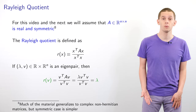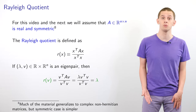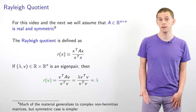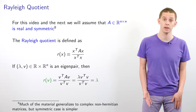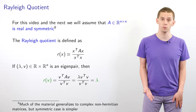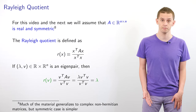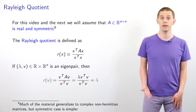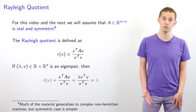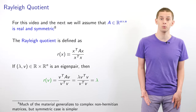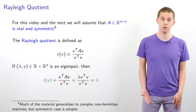For this video and the next we're going to look at the special case when our n by n matrix A is real and symmetric. Much of this material can be generalized to the complex non-Hermitian case, but we'll stick with real symmetric matrices because it makes the analysis simpler. For an n-dimensional vector x, we define the Rayleigh quotient R(x) to be equal to x transpose Ax divided by x transpose x.